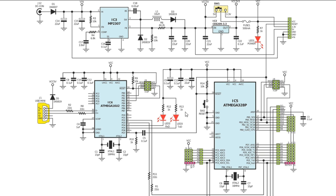Here we have a ceramic capacitor and a polarized capacitor, plus a resistor. This is a push button switch — all its pins are connected to ground. When you press the switch, VCC goes to ground. This appears to be the power button.